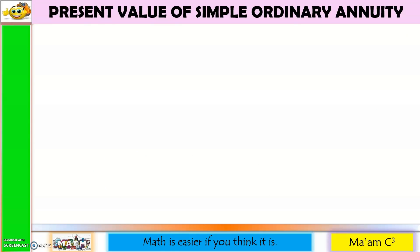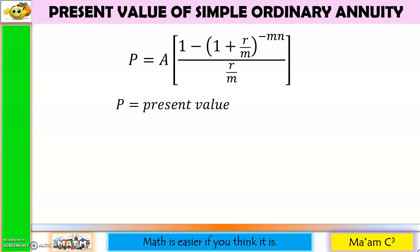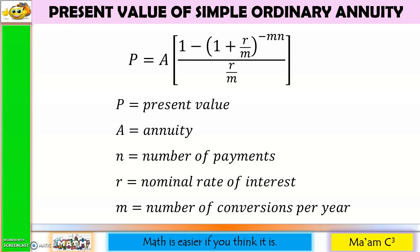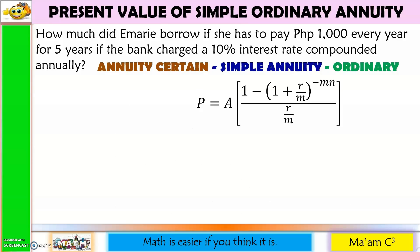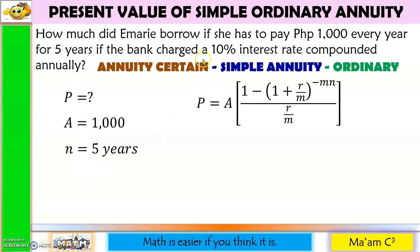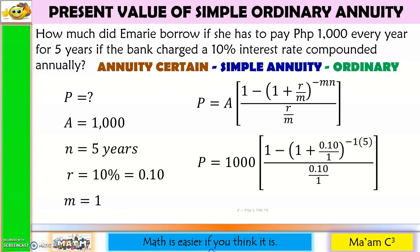Just like in future value, present value of simple ordinary annuity also has a formula with the same definitions of letters. Let us solve the same problem using the formula. How much did Emery borrow? A = 1,000, N = 5, R = 0.10, M = 1. Substituting these values gives us 3,790 pesos and 79 centavos — exactly the same as our previous answer.